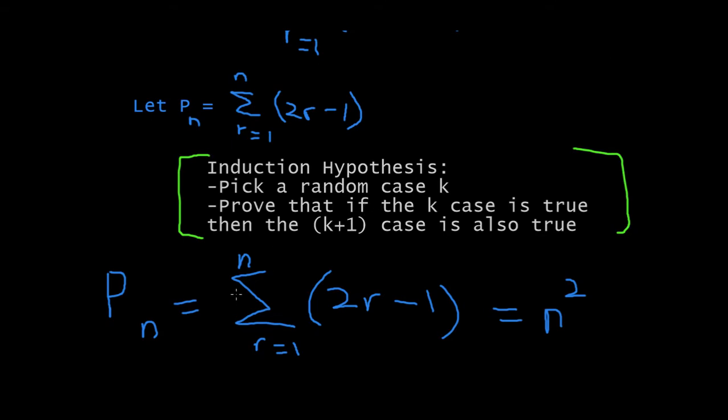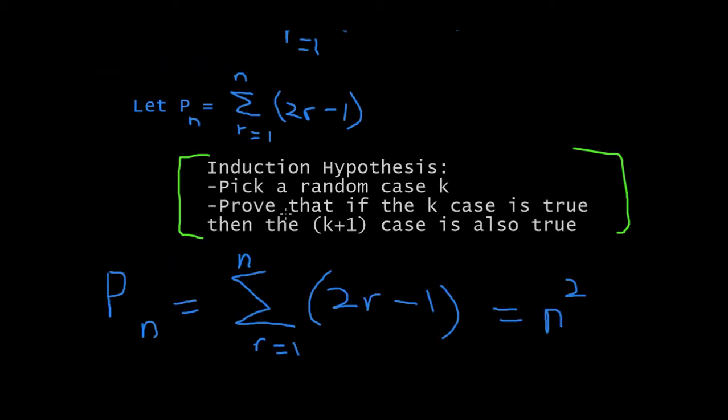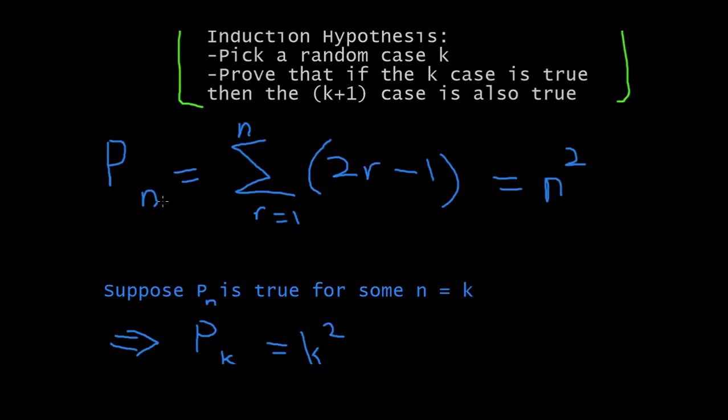So, before I go forward, let me just say that some teachers do this differently. Some people, I will teach you how my teacher taught us it, and it might look, the format might look a bit different. But, it's the same concept. And you will get the marks either way. So, what we say now is, I just rewrote the line now. Pn is equal to the summation of 2r minus 1 is equal to n squared.